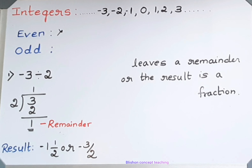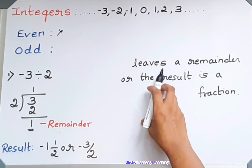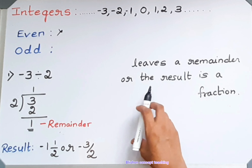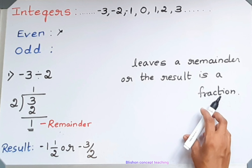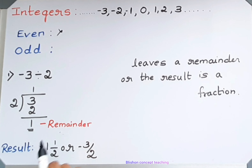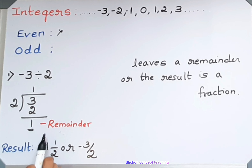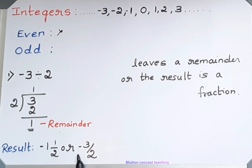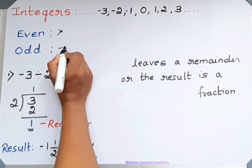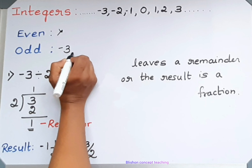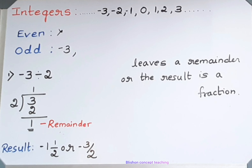Listen carefully. It leaves a remainder or the result is a fraction. Here, 1 is left as a remainder and the result is in the form of a fraction. So without thinking, you can say that minus 3 is an odd number because it satisfies the definition of odd number.